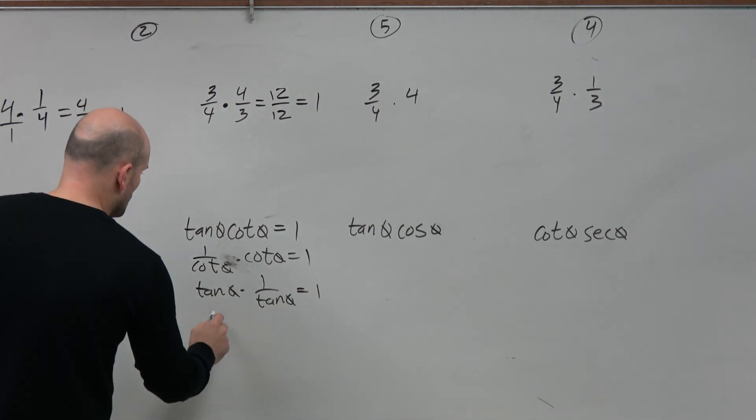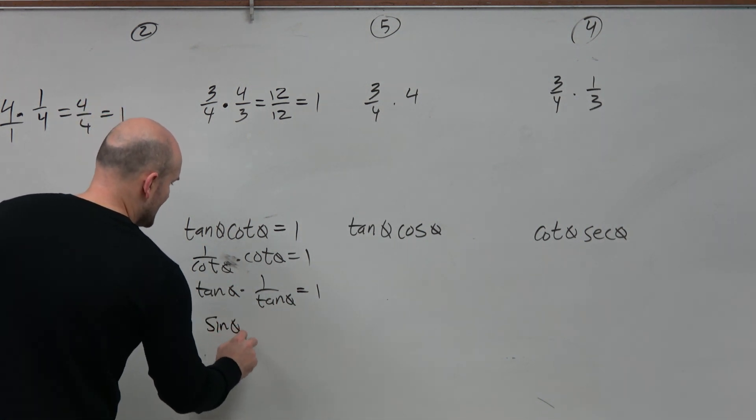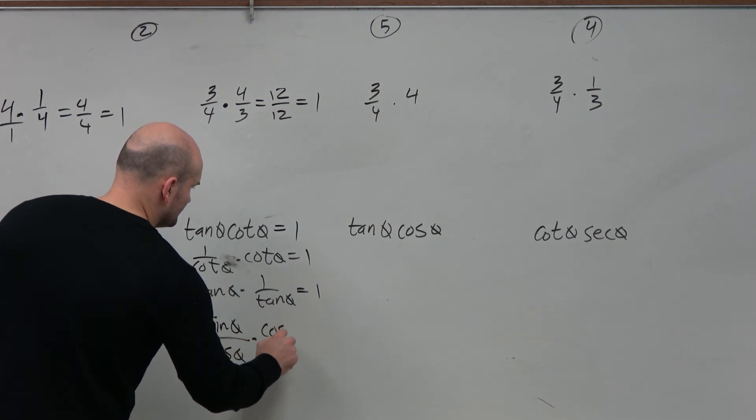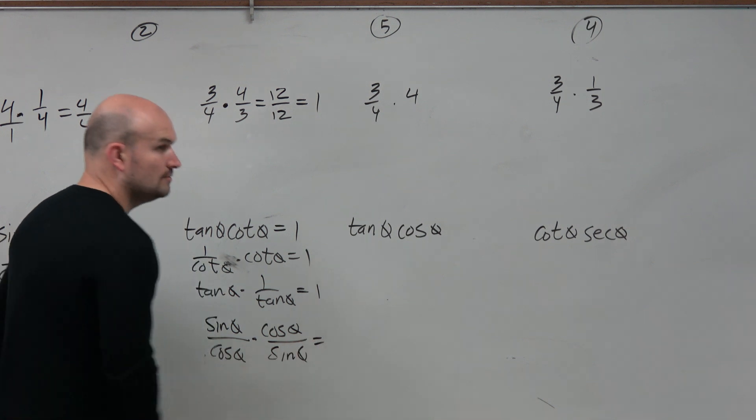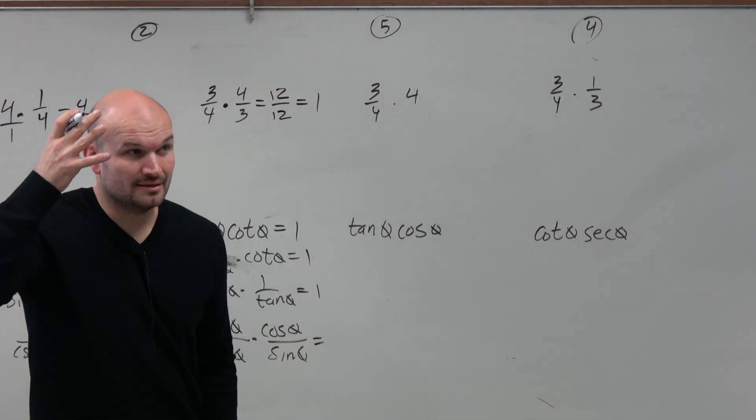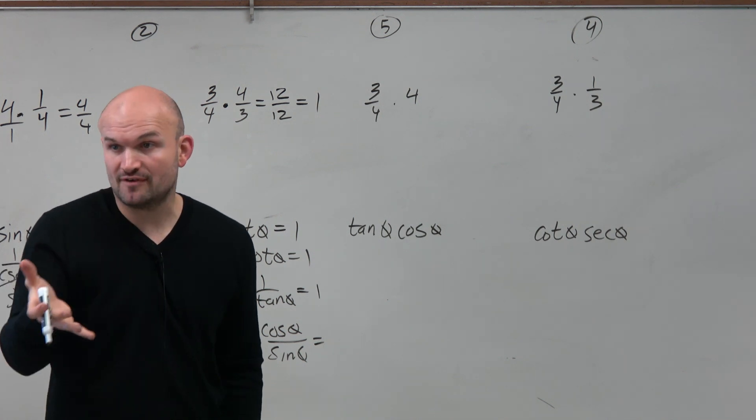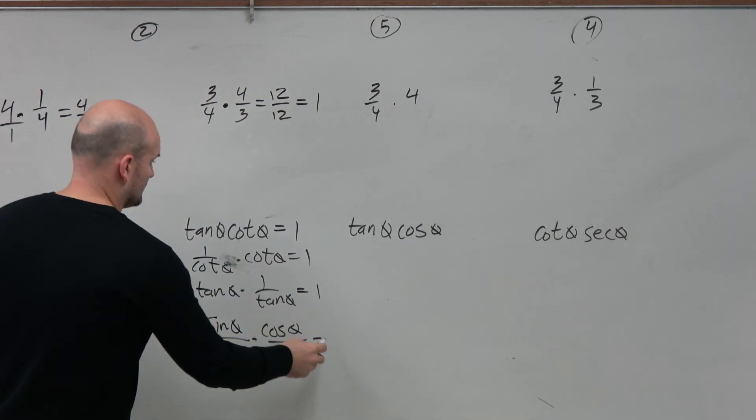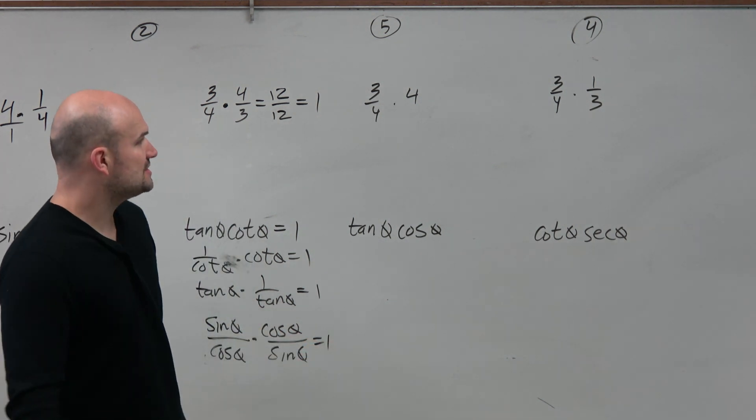But what if you also use the quotient identities? Sine of theta over cosine of theta times cosine of theta over sine of theta. Would that also work? Yes. And whatever way your brain wants to immediately go without falling asleep will work. All right?